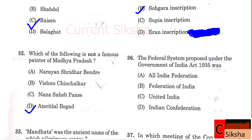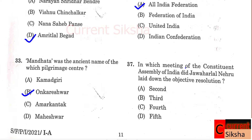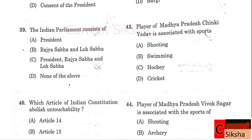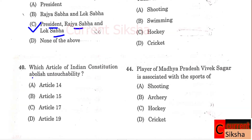Question 36: The federal system proposed under the Government of India Act 1935 was? Correct option A - All India Federation. Question 37: In which meeting of the Constituent Assembly of India did President Jawaharlal Nehru lay down the Objective Resolution? Correct option B - Third. Question 38: What is required under Article 108 of the Constitution of India to summon a joint sitting of the two houses of Parliament? Correct option - Intention of the President. Question 39: The Indian Parliament consists of? Correct option C - President, Rajya Sabha, and Lok Sabha.